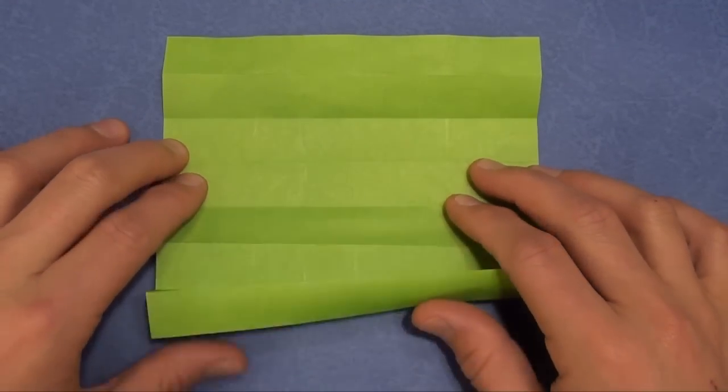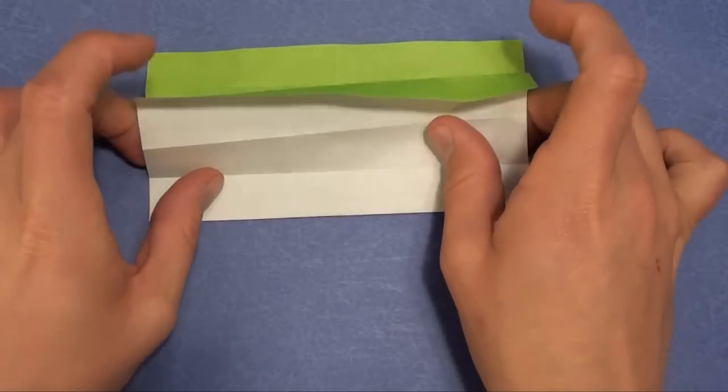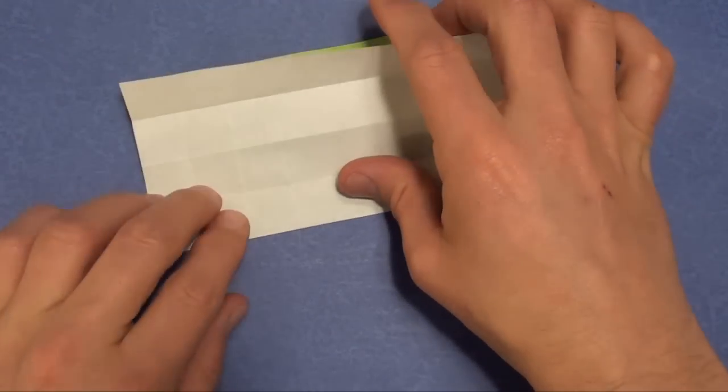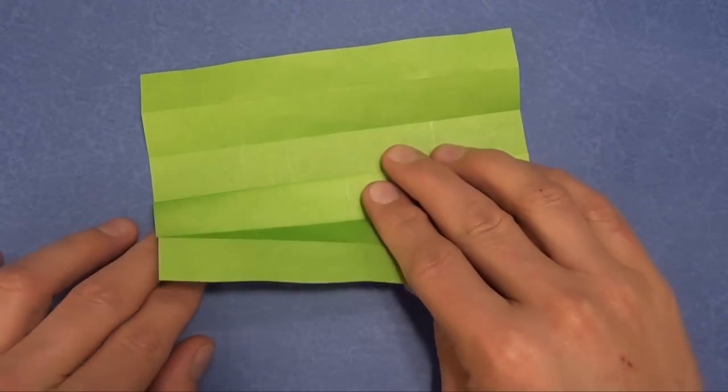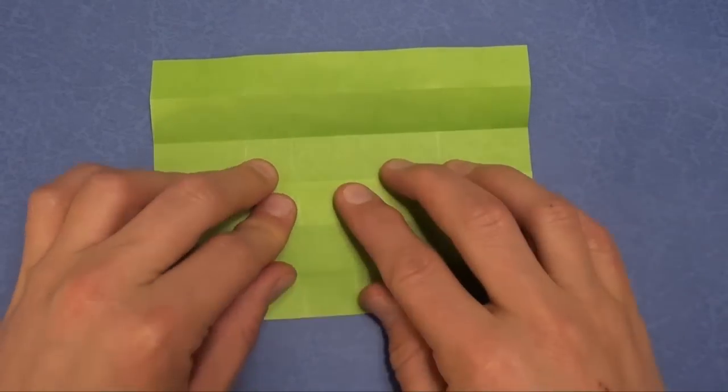So we unfold it, colored side up. Valley fold in half on existing crease. And then fold down like this.